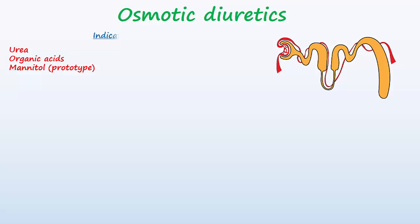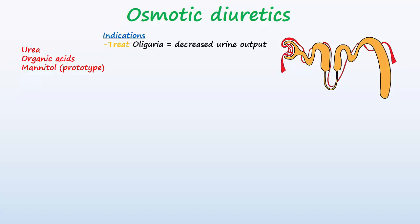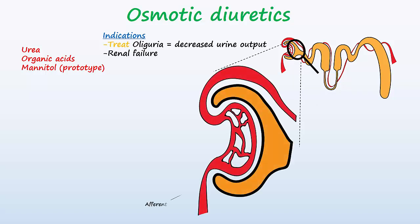These drugs are indicated in the treatment of oliguria, which is decreased urine output, and to prevent damage to the kidney during the initial stages of acute renal failure. They do this by increasing renal blood flow (RBF) coming into the glomerulus through the afferent arteriole, and in doing so, they also increase the glomerular filtration rate (GFR).